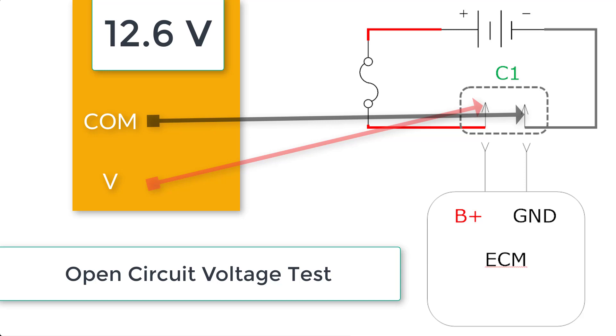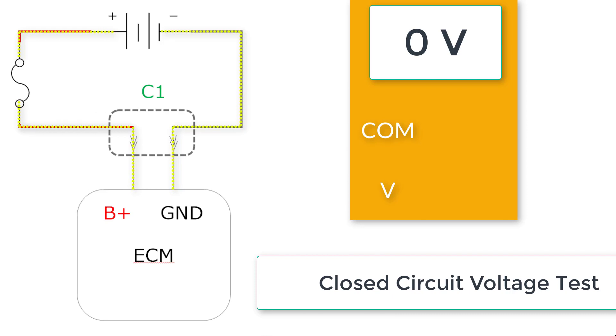We now need to change to a closed circuit voltage test. We'll switch over to the other schematic. Notice now that we have our connector connected. This is important in this test in order to determine whether or not there is voltage dropping somewhere else in the circuit. Voltage will not drop in a circuit that is disconnected or that is open. We must have current flowing through the circuit in order to properly test for a voltage drop somewhere in the circuit.